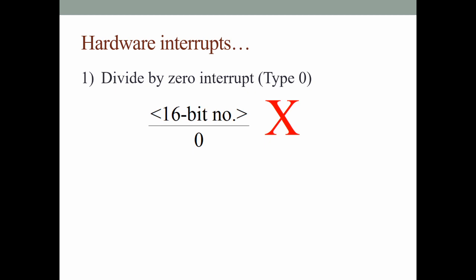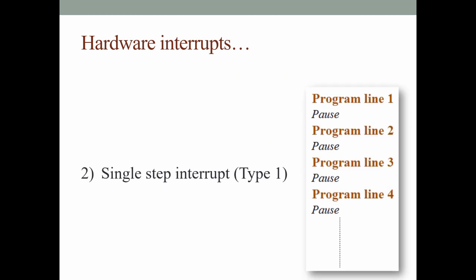The first hardware interrupt is divide by zero interrupt, which is also known as a type zero interrupt. As you can see in the example, if by any chance a 16-bit number or an 8-bit number is attempted to be divided by zero, then a divide by zero interrupt is generated.